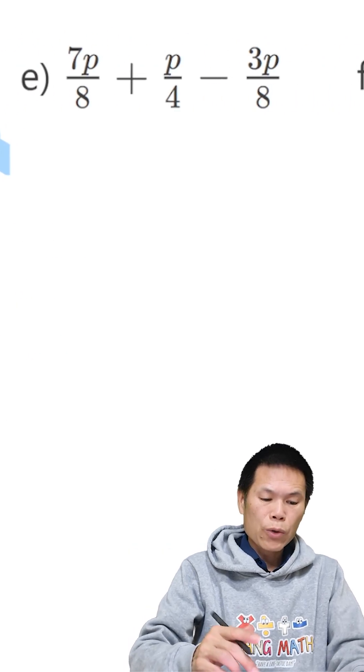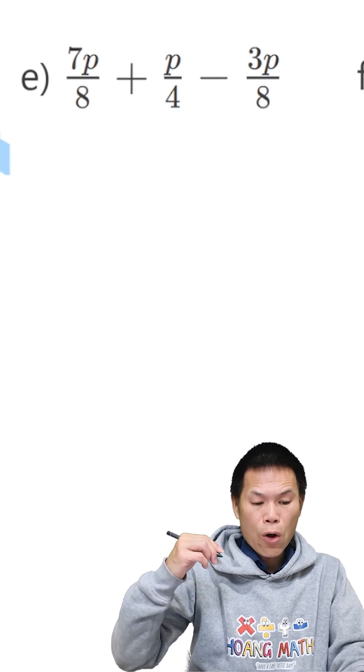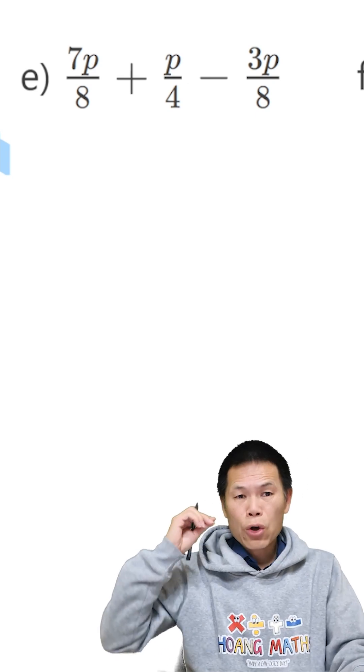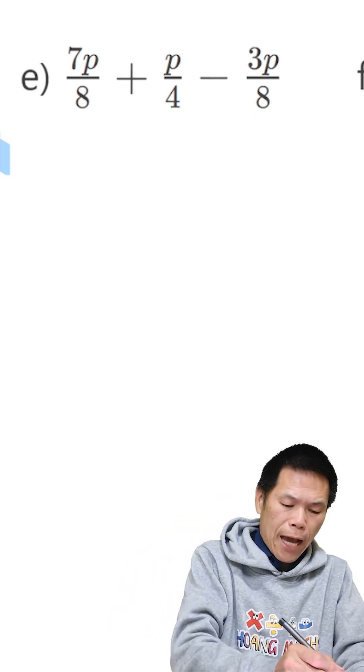Now, part E. So we have 8, 4, 8 again. That is the denominator. So therefore, the lowest common denominator is 8.